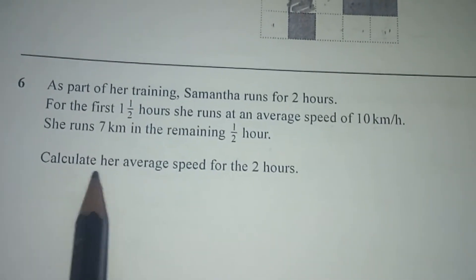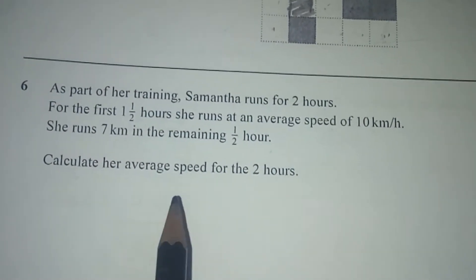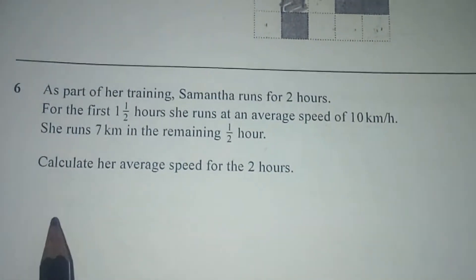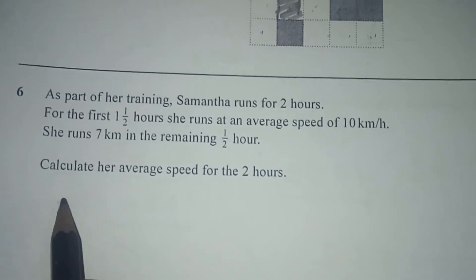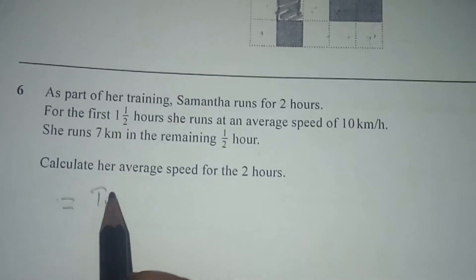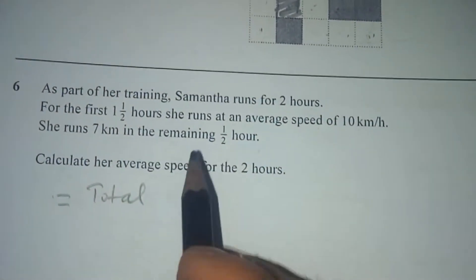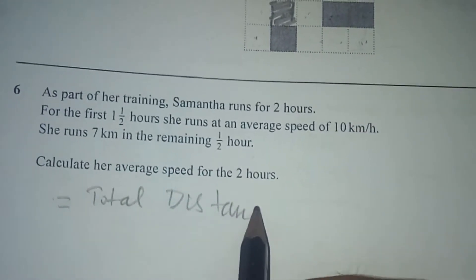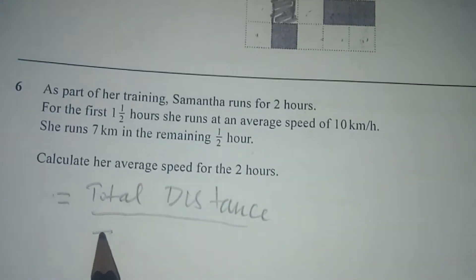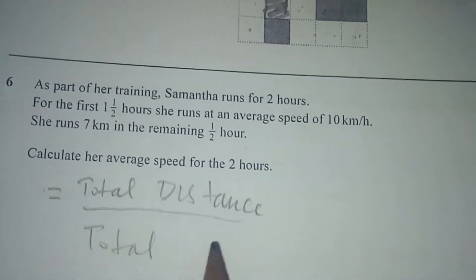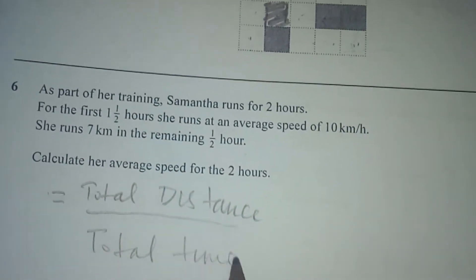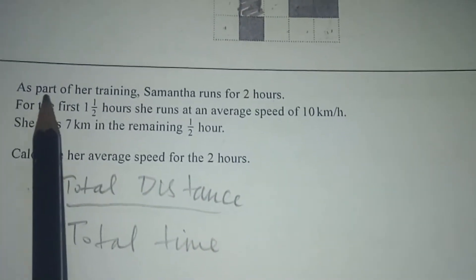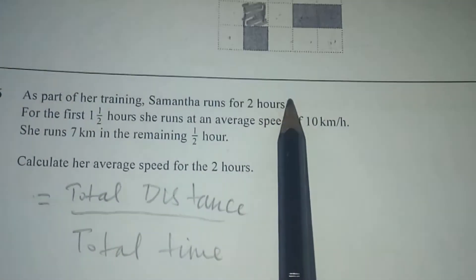We have to calculate the average speed for the two hours — that is, the average speed of the whole journey. The formula for average speed of the whole journey is total distance over total time. The two-hour journey is covered in two parts.